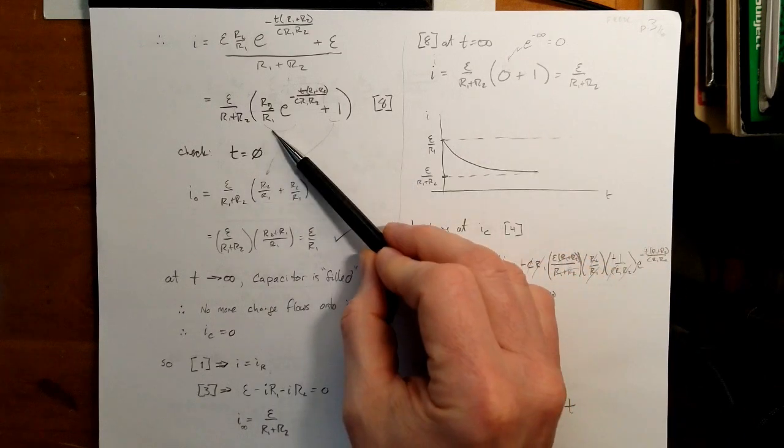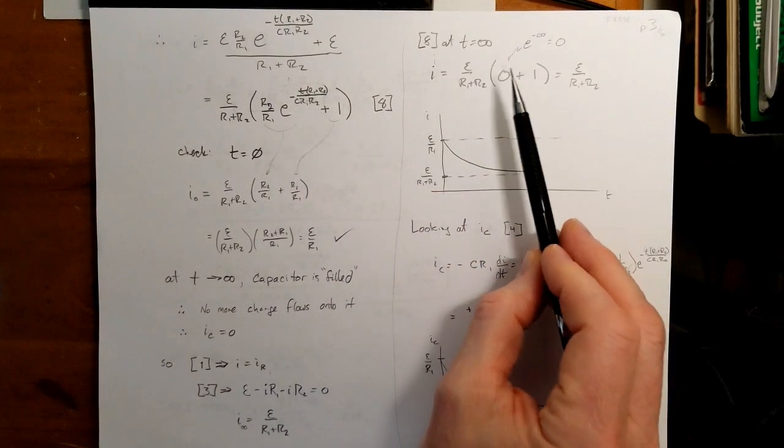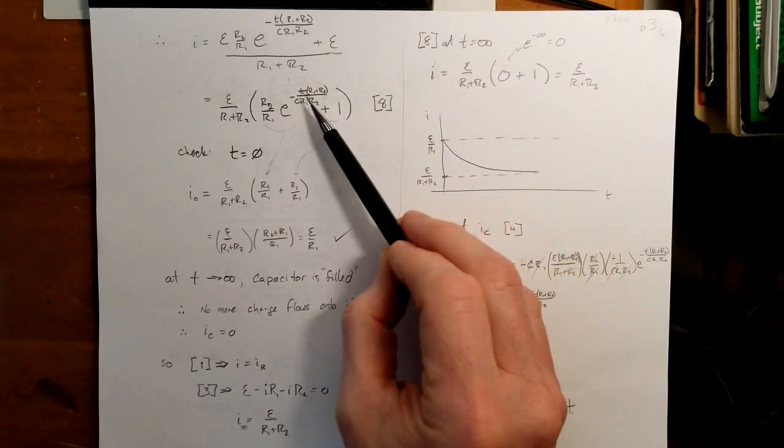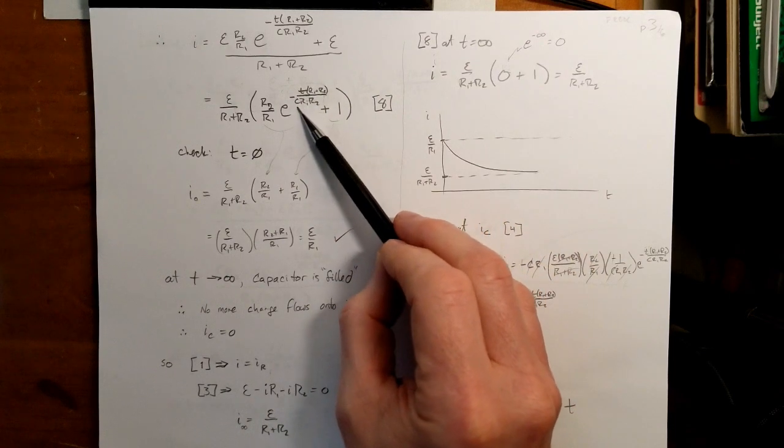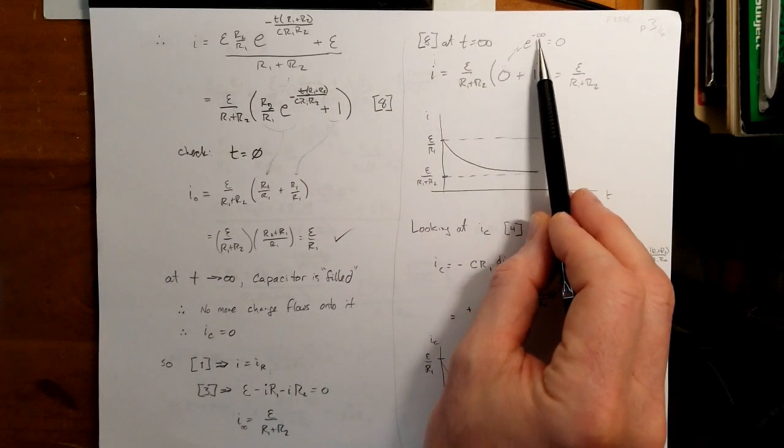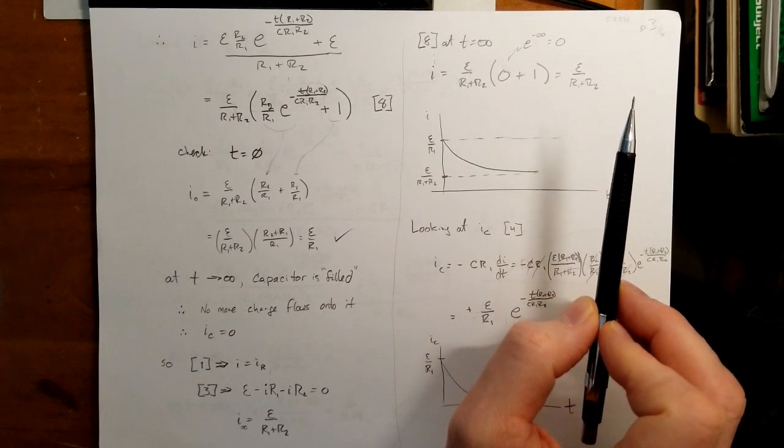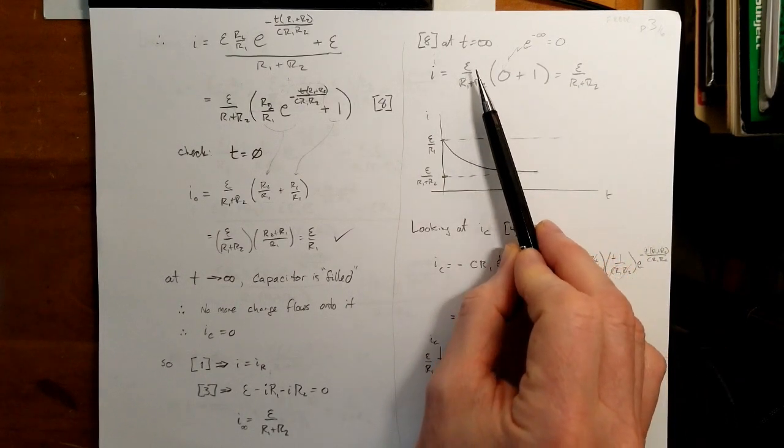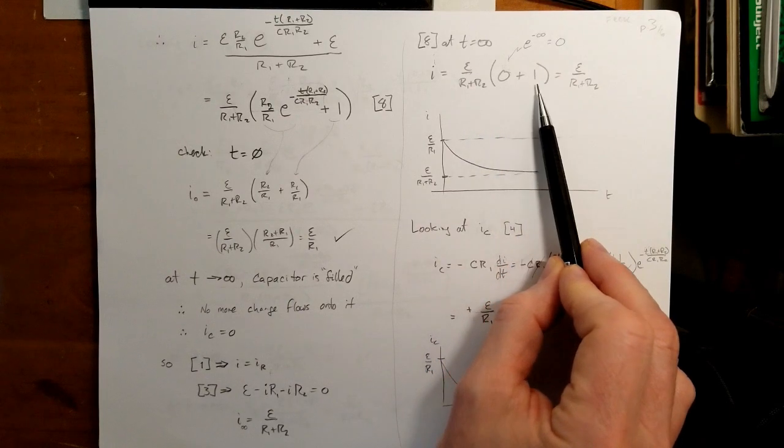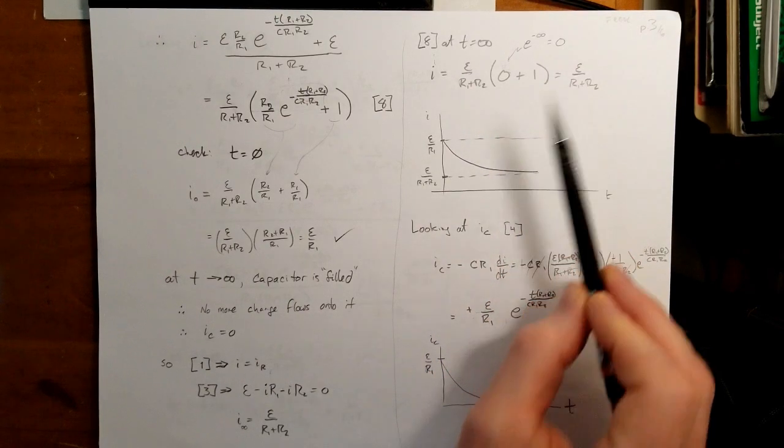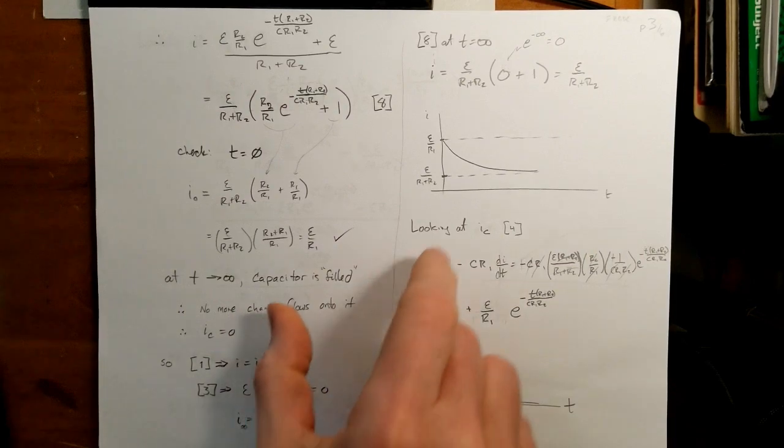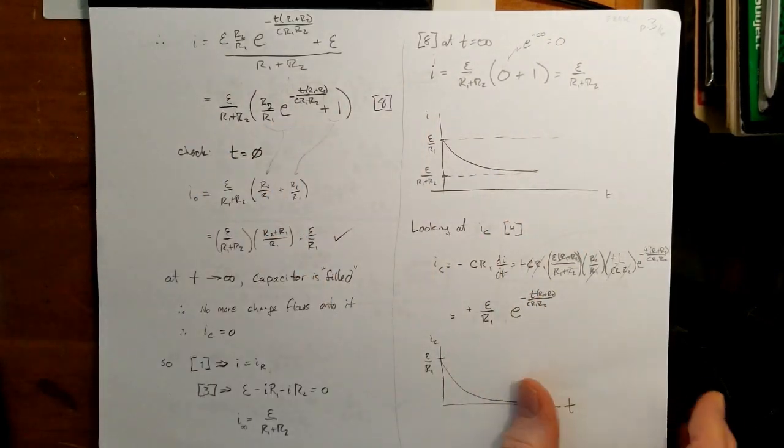Or, plugging into this equation right here, just to make sure it's still making sense, again, we plug infinity in for T, and so this term right here becomes negative infinity, and so E to the negative infinity is zero. For you, the math purists, I know we're talking about limits. This is physics speak. And we have epsilon over R1 plus R2 times one, and we get epsilon over R1 plus R2, and so what we got through thinking through it is the same thing we get by plugging into my equation here.